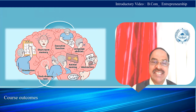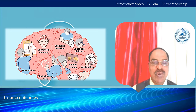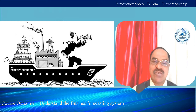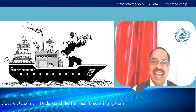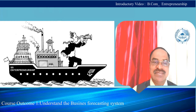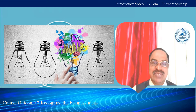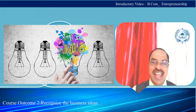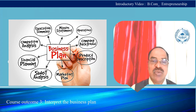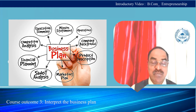The course has three levels of cognitive measurement as course outcomes. The first course outcome is to understand the business forecasting system. The second course outcome is to recognize the business ideas. The third course outcome is to interpret the business plan.